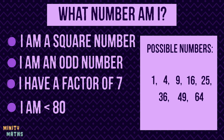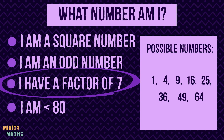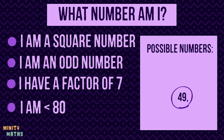Now we have listed all the square numbers less than 80 we can narrow the list down even more. In fact, choosing just one of these clues will give us the correct answer. No other number on this list has a factor of 7 except 49, so this must be the answer. We can use the odd number clue to double check that it satisfies all of the conditions.